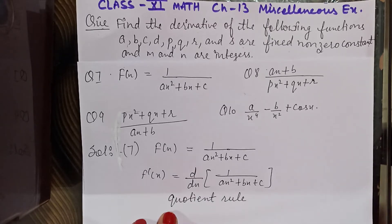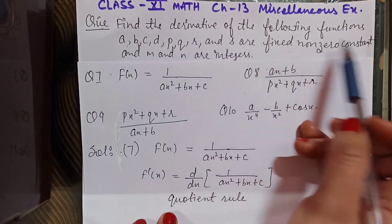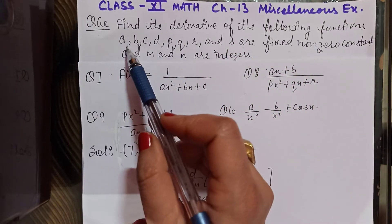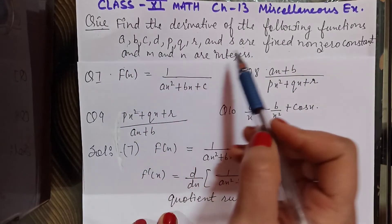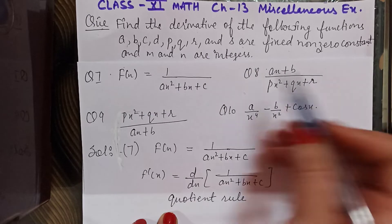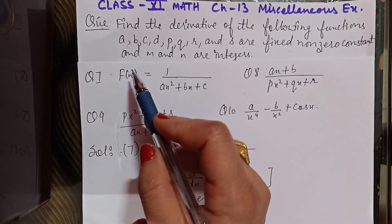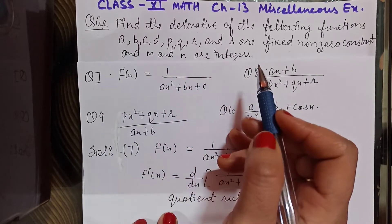Question: find the derivative of the following functions. A, B, C, D, P, Q, R and S are fixed non-zero constants and M and N are integers.